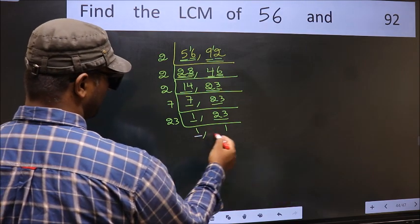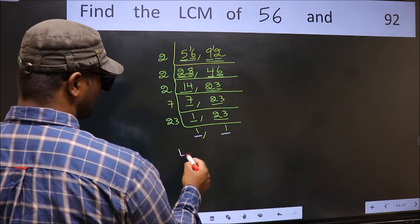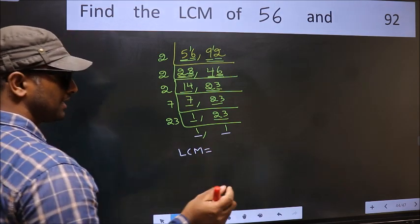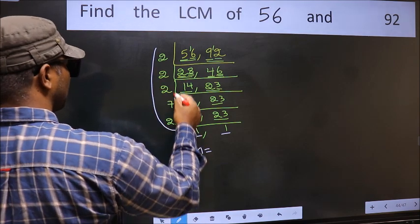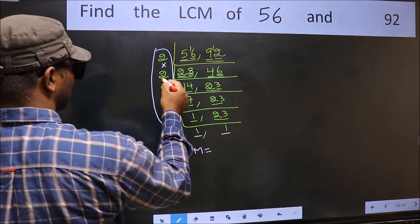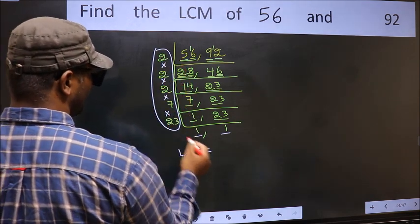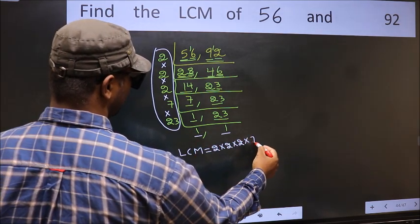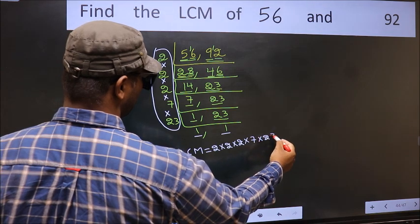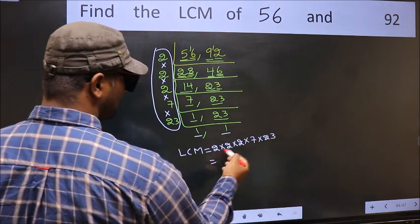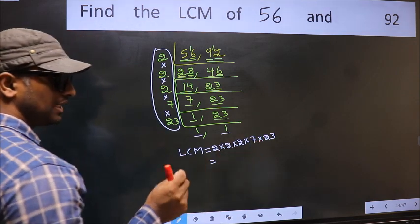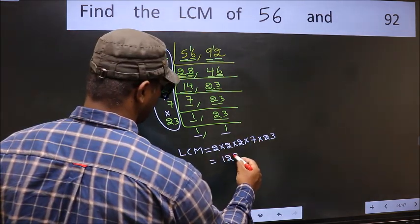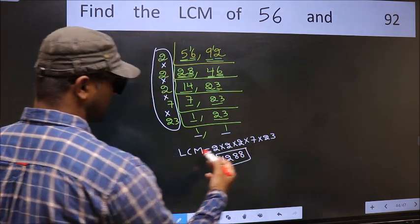Now we got 1 in both places, so focus on the other number 23. 23 is a prime number, so 23, 1's — 23. We got 1 in both places, so our LCM is the product of these numbers: 2 × 2 × 2 × 2 × 7 × 23. When we multiply these numbers, we get 1,288. So 1,288 is our LCM.